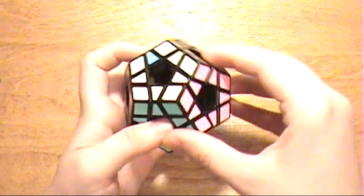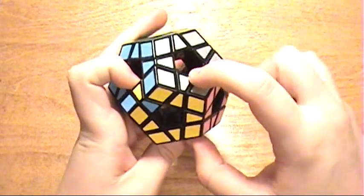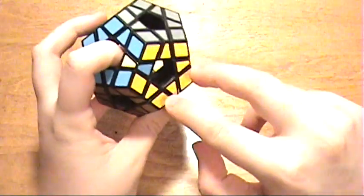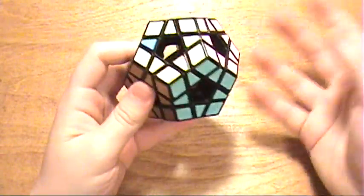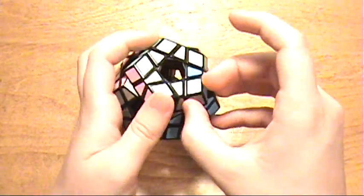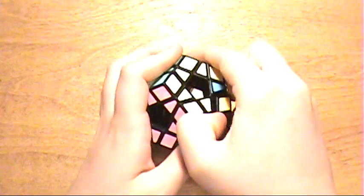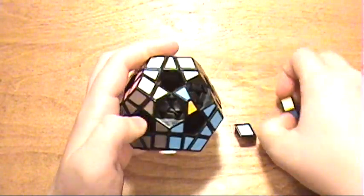There's also some cases where two edge pieces need to be switched, or two corners need to be switched, but that wasn't the case for me. You simply just pop out pieces and replace them to fix the parity errors.